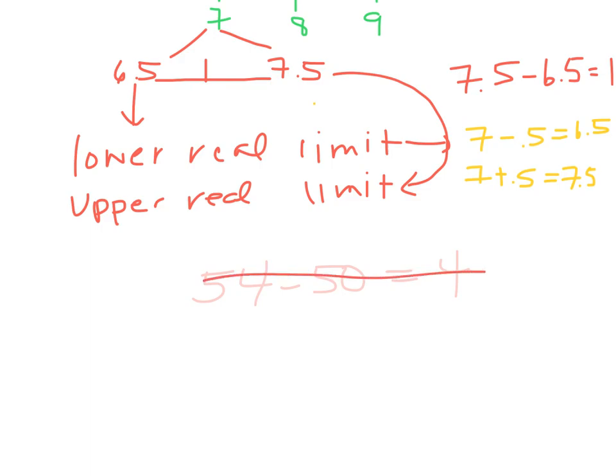And that's the wrong answer because it didn't take into account the upper and lower real limits. So instead what you would need to think about is that you have 54, and because it's the upper limit of that interval you would need to add 0.5, so that would mean it's 54.5. Then you would need to think about that lower limit was 50 and because it's the lower limit you would need to subtract 0.5 which would equal 49.5.